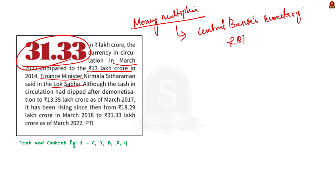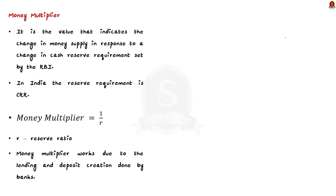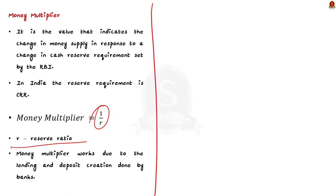The money multiplier is a numerical value that indicates how much the money supply will get impacted in response to a change in cash reserve requirement mandated by the RBI. In India, the cash reserve requirement is maintained as CRR. The formula for the money multiplier is 1/R, where R is the cash reserve requirement. Since the reserve requirement is in the denominator, a higher reserve requirement means lower money multiplication. Note that 1/R is the maximum possible money multiplier.